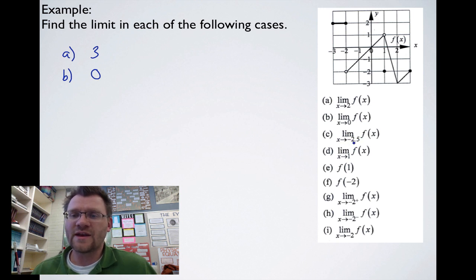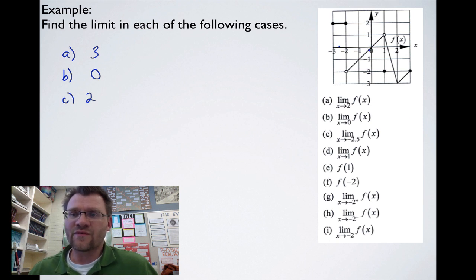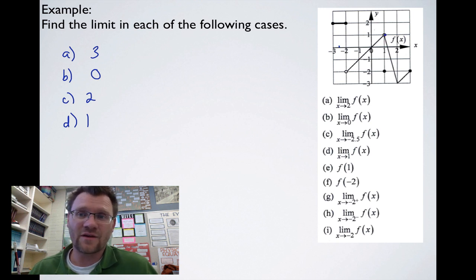For the limit as x approaches 1: as we approach from both the left and right-hand side of 1, it approaches a height of 1. Now here's the concept where the graph doesn't actually exist at x = 1. When x actually equals 1, the point is somewhere else — down here. However, the limit is still 1 because it's approaching a height of 1 from both sides, even though the function doesn't exist at that point.